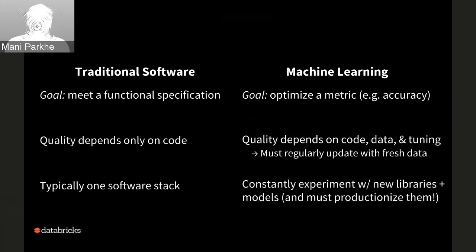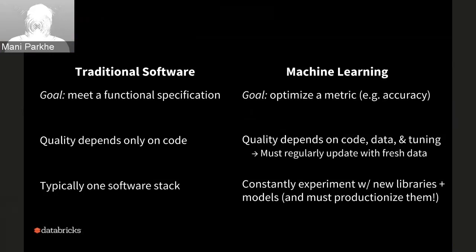In traditional software, you develop off a common software stack that the team has worked with in the past. Machine learning, on the other hand, requires constantly experimenting with newer libraries, different frameworks, and new algorithms. Not only that — beyond experimenting, you must know how to productionalize them. Just having a model built with a new framework is not enough; you need to know how to put it into a serving fashion in your existing framework.